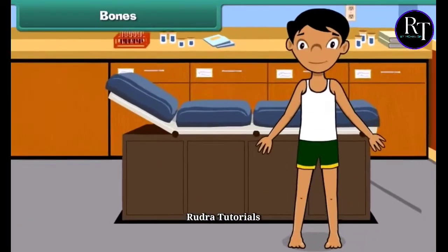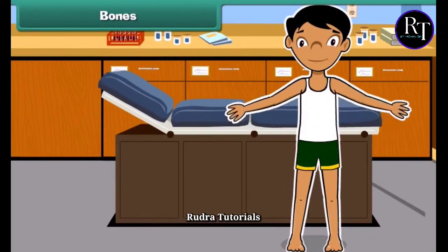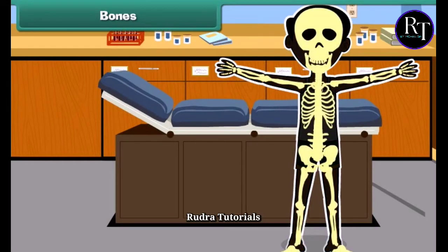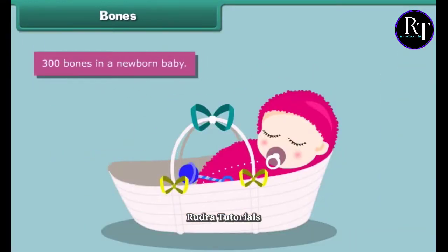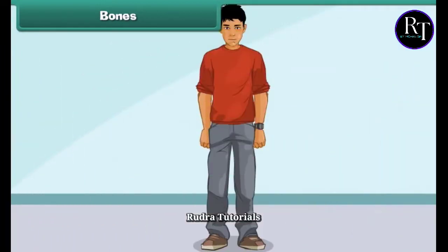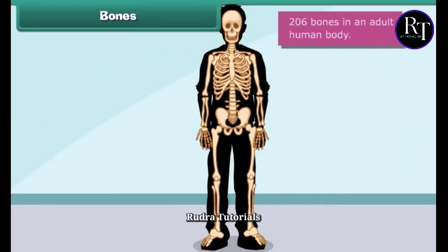Every single person has a skeleton made up of many bones. These bones give your body a structure. At birth, a newborn baby has about 300 bones, whereas an adult human body contains approximately 206 bones. What functions do bones perform? Come, let us know.